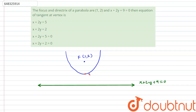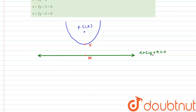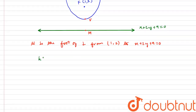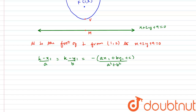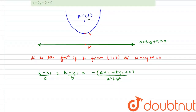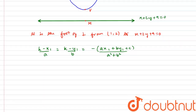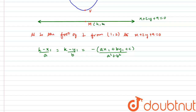The vertex of this parabola is point V. Let us also find point M, which is the foot of the perpendicular from F on this directrix. To find M, the foot of perpendicular from point (1, 2) to the line x + 2y + 9 = 0, we use the general formula: (h − x₁)/a = (k − y₁)/b = −(ax₁ + by₁ + c)/(a² + b²), where (x₁, y₁) is the point and ax + by + c = 0 is the line. Here (h, k) will be the coordinates of M.